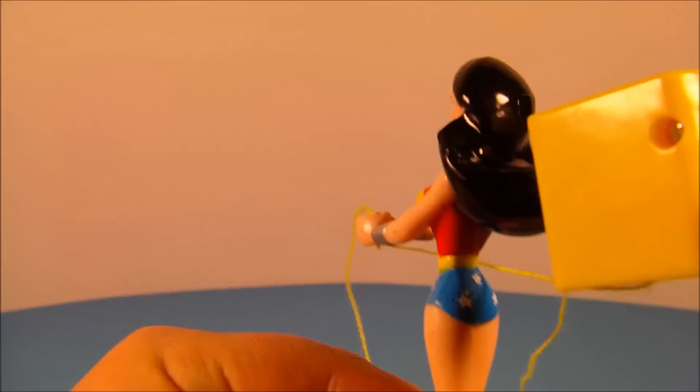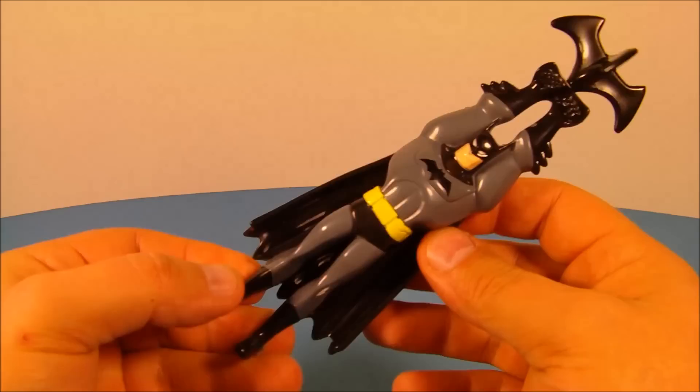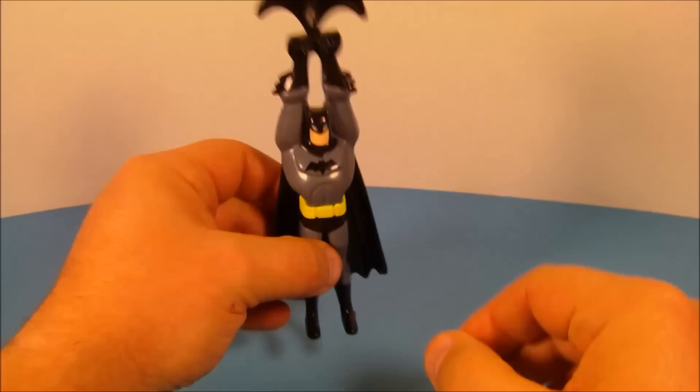Next we have climbing Batman with his grappling hook. So he's got his cape there but nothing moves. It's all solid plastic so there's no articulation, but he does stand quite well just like so.